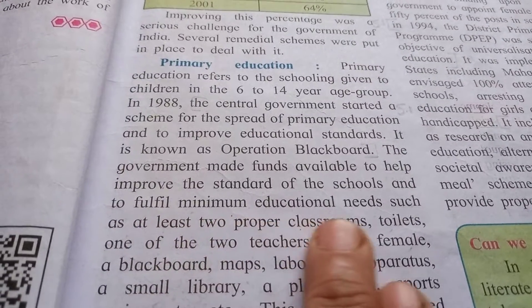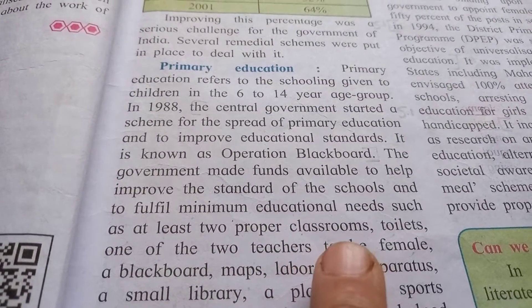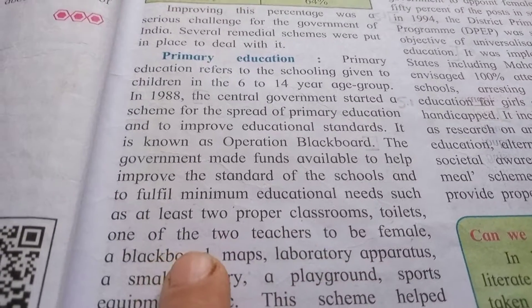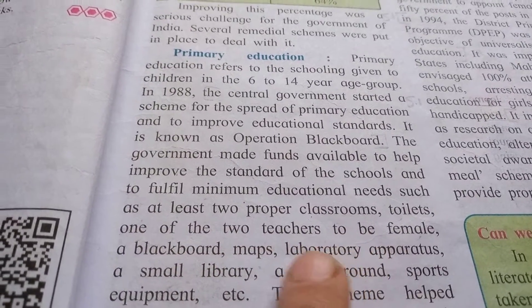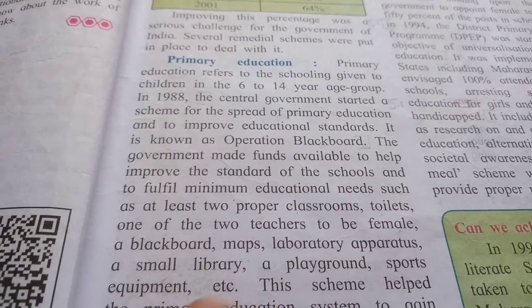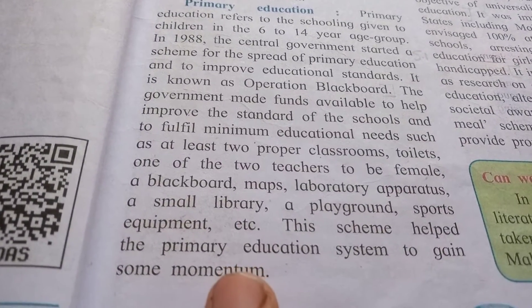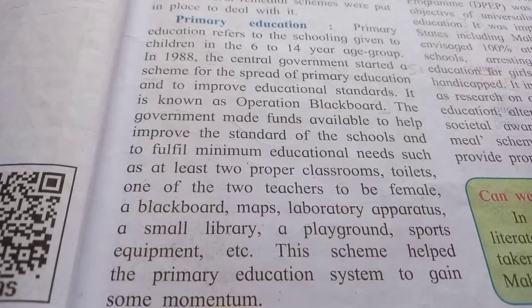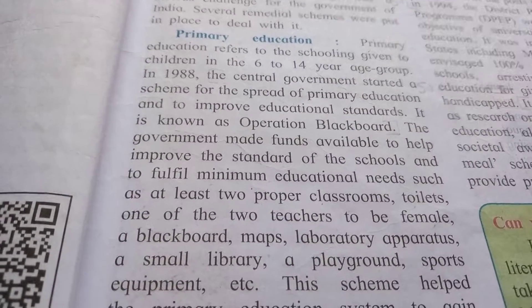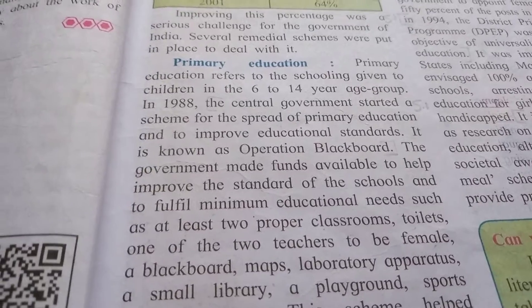It was really difficult to fulfil the standard of the school and to fulfil the minimum educational needs, such as at least two proper classrooms. If there is a school, it is very important and necessary to have two proper classrooms, toilets, female teachers, a blackboard, maps, laboratory apparatus, a small library, playgrounds, and sports equipment. It is made compulsory for all kids to get educated at this age.